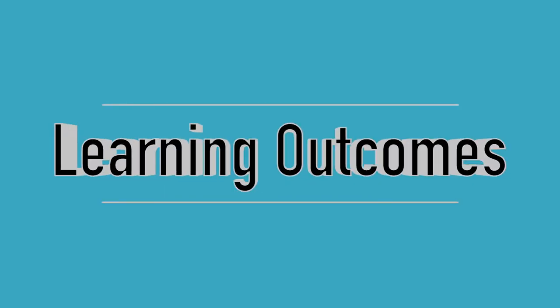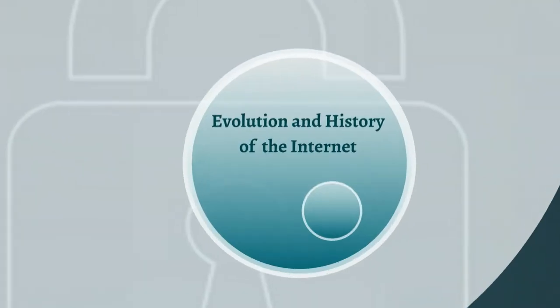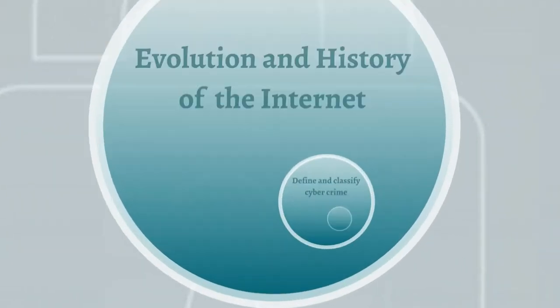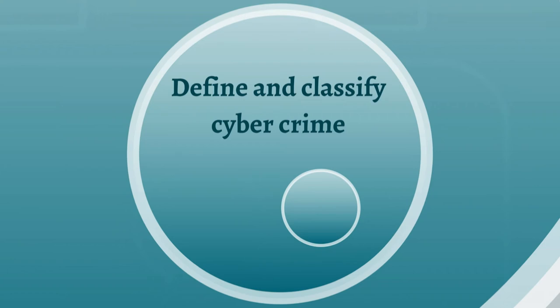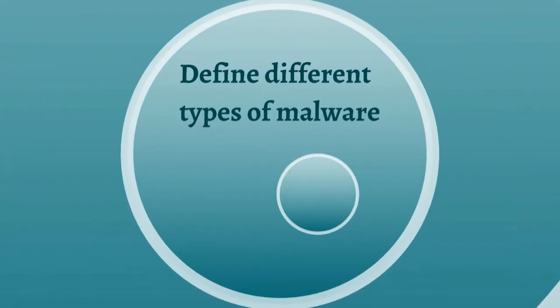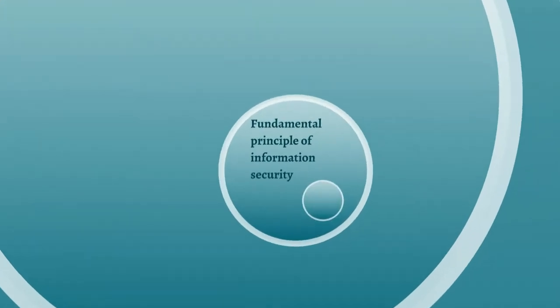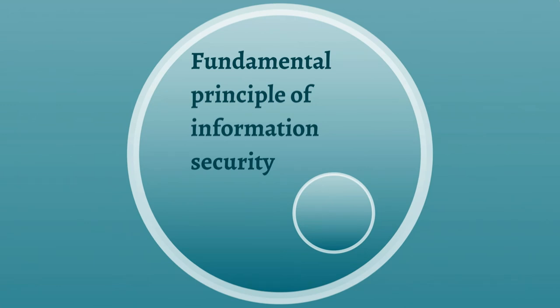This course is designed for students who have a basic knowledge of computers but no prior knowledge of cybersecurity. After completing this course, the learner will be able to know the evolution and the history of the Internet. They will be able to define cybercrime and classify cybercrimes. The learner will also be able to define malwares and know the difference between various types of malware, as well as understand what information security is and its fundamental principles.